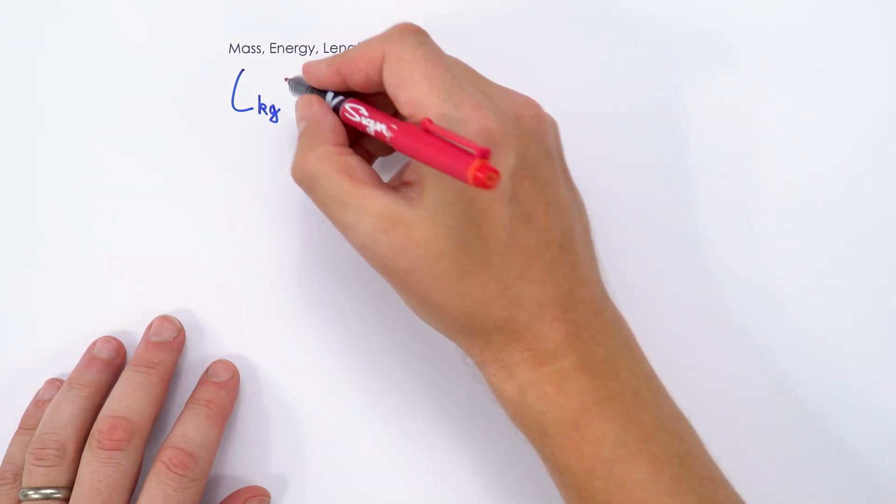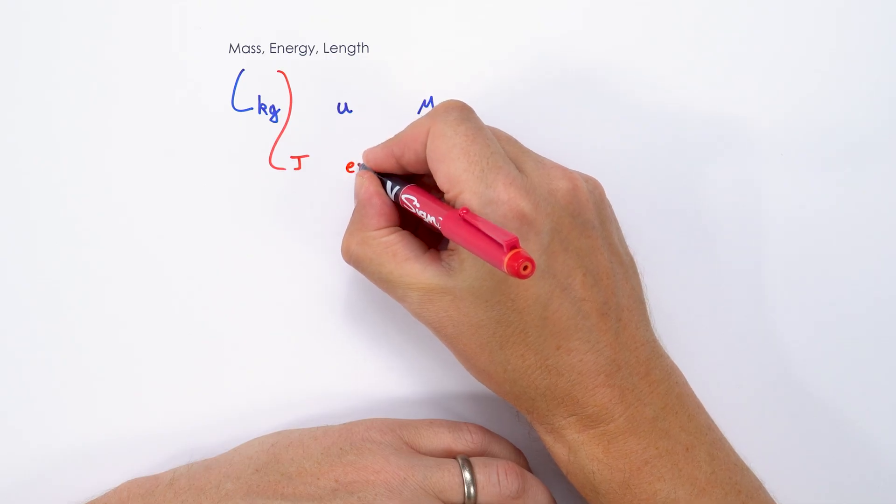When it comes to energy, normally we use joules, but if we've got things which are really small like tiny particles moving, we can actually use something called an electron volt. This is where if you have, for example, a potential difference of one volt and you have an electron accelerated by that potential difference, it's going to increase its speed, gain energy, until it has one electron volt of energy.